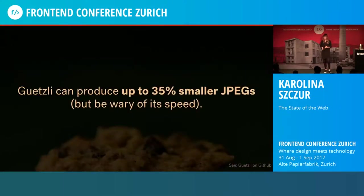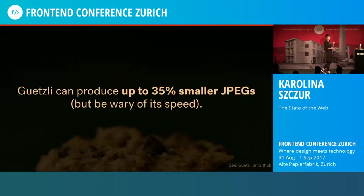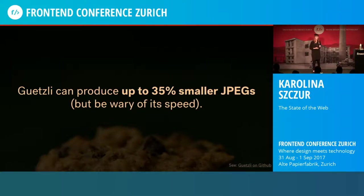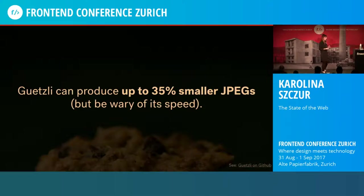If you're willing to try something experimental, earlier this year Google released Guetzli, an algorithm based on learnings from WebP and Zopfli that can produce up to 35% smaller JPEGs — which is quite huge. Unfortunately, it comes with a downside: the time it takes to process images is approximately one minute per megapixel, so it can be quite slow.